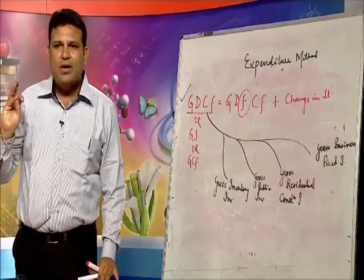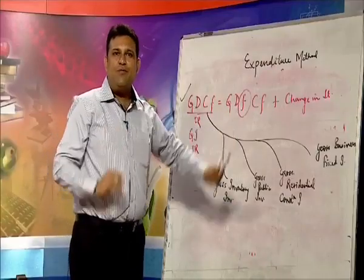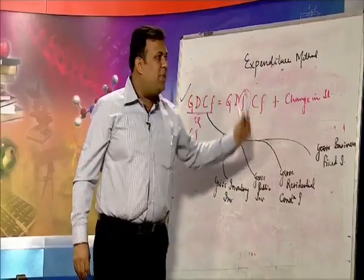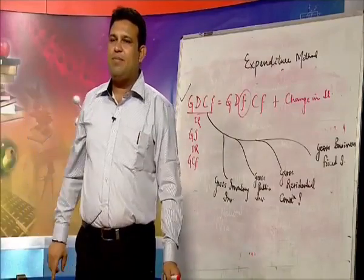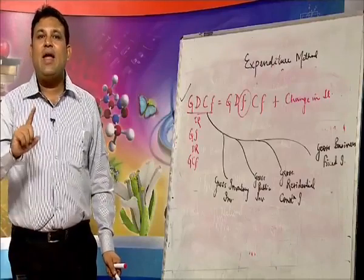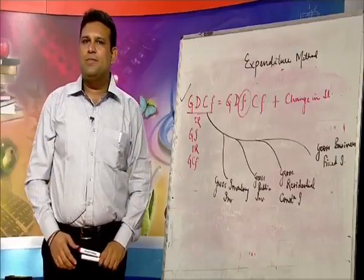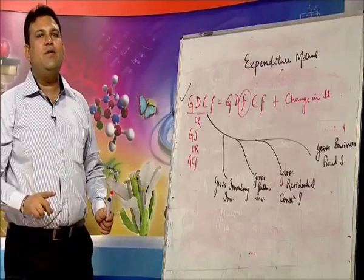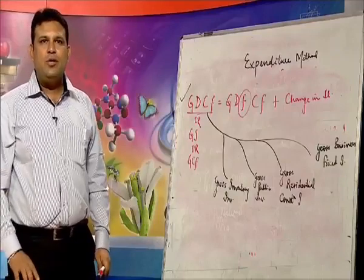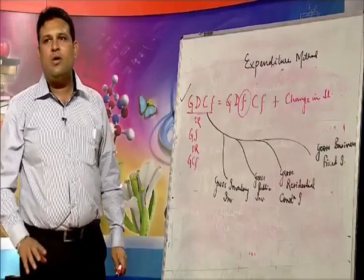To summarize the expenditure method: private final consumption expenditure + government final consumption expenditure + gross domestic fixed capital formation (if fixed, add change in stock) + net exports = GDP at MP. Deduct depreciation to get NDP at MP. Deduct net indirect taxes to get NDP at FC, which is domestic income. Add NFIA to get national income, NNP at FC. This is the third method of estimating national income. A question based on income and expenditure method simultaneously will be discussed in a new session.